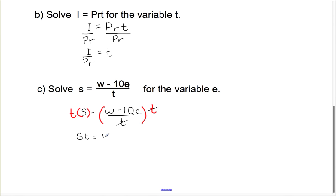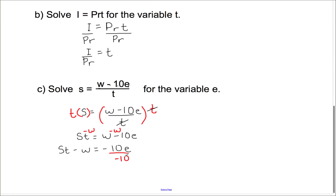The two T's cancel because T divided by T is 1, so we have W minus 10E on that side, and S times T on the other side. Next, I need to get the 10E by itself, so I'm going to subtract W on both sides. Now this side is ST subtract W, equals negative 10E. Lastly, to get E completely by itself, I have to divide by negative 10 on both sides. So this side becomes ST minus W over negative 10, and that equals E.